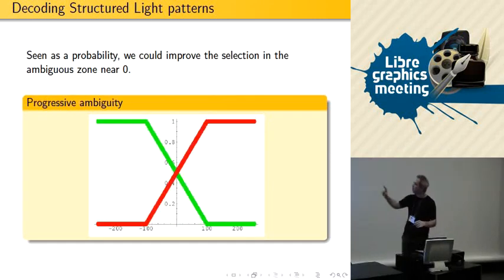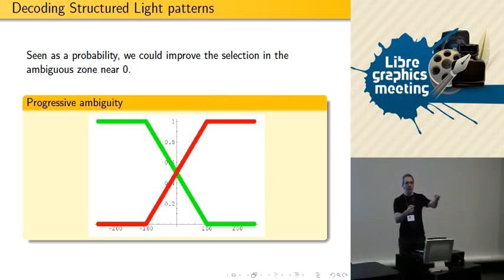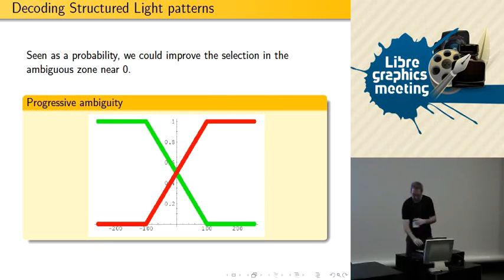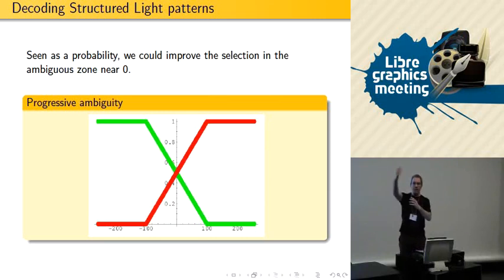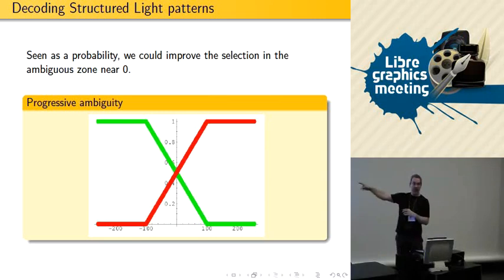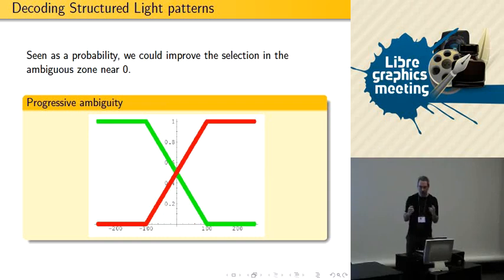What's important to know is: when things go well, you project an image that will be really white or really black, and when you subtract white and black that's either very negative or very positive. But in the middle, if you observe something gray and you subtract, it's ambiguous — you don't know if it was white or black, so that area is ambiguous.